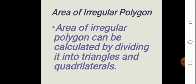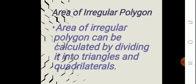Area of irregular polygon. Irregular means the sides are not equal — all sides are different. To find the area of an irregular polygon, we divide it into triangles and quadrilaterals using diagonals, find the area of each triangle and quadrilateral, and then add them all together to get the total area. Thank you. I hope you all understood this very nicely.